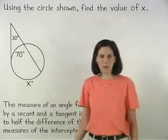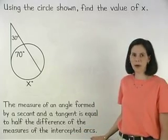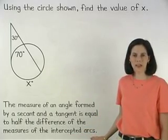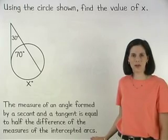And remember from the previous example that the measure of an angle formed by a secant and a tangent is equal to half the difference of the measures of the intercepted arcs.